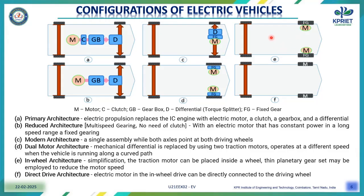Architecture E represents the in-wheel architecture. It is a simplification of the D structure — the traction motor is placed inside the wheel, and a thin planetary gear setup may be employed to reduce the motor speed. This structure is a significant simplification compared with the D type architecture.